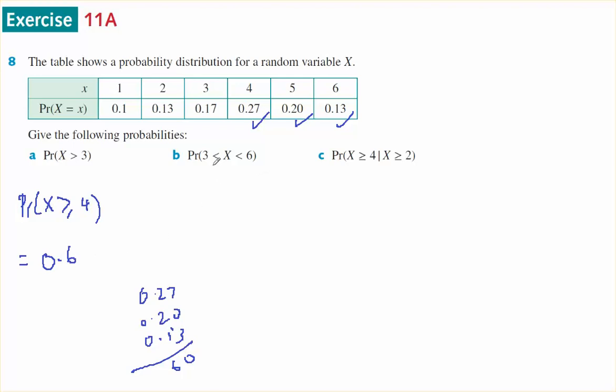The probability that X is bigger than 3 but less than 6 is the same as the probability that X is less than or equal to 4 and less than or equal to 5, because I don't include 3 and I don't include 6.